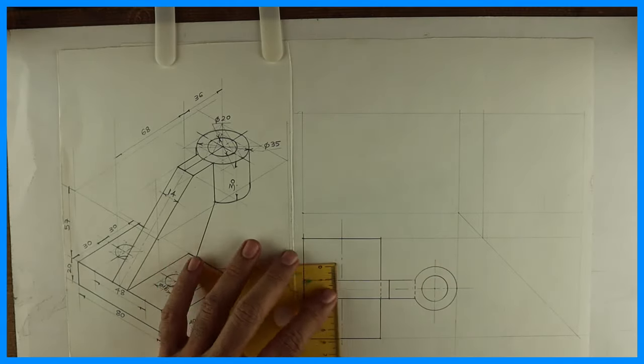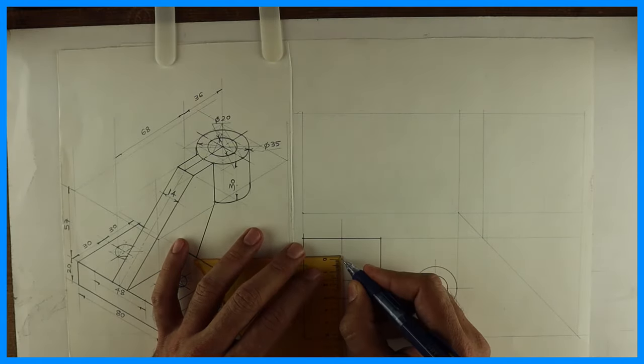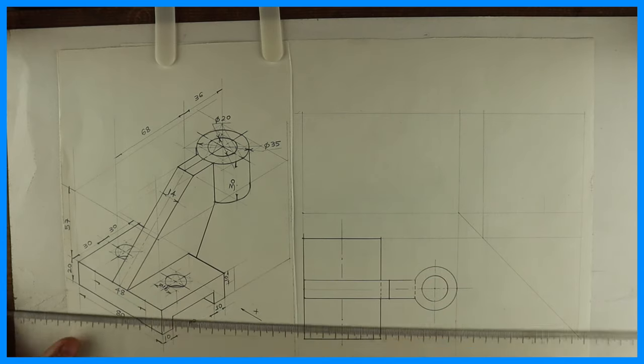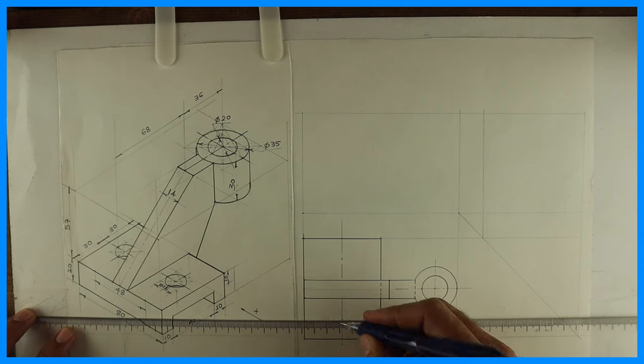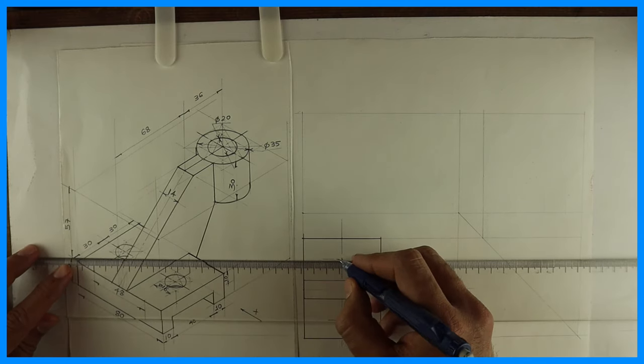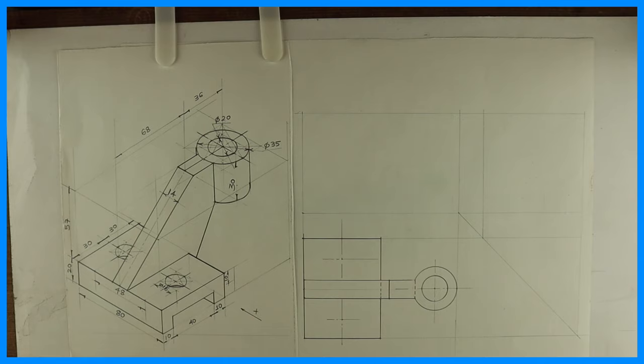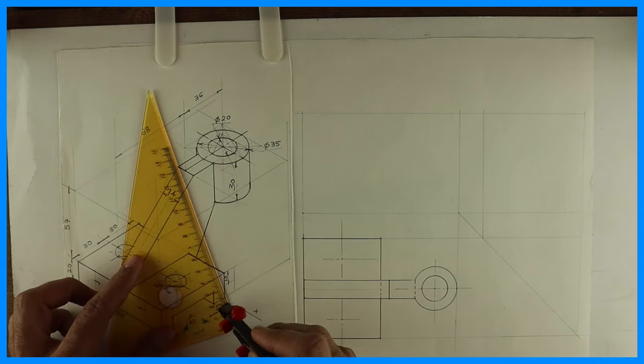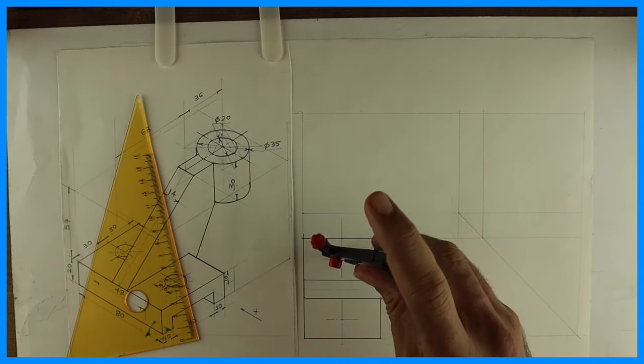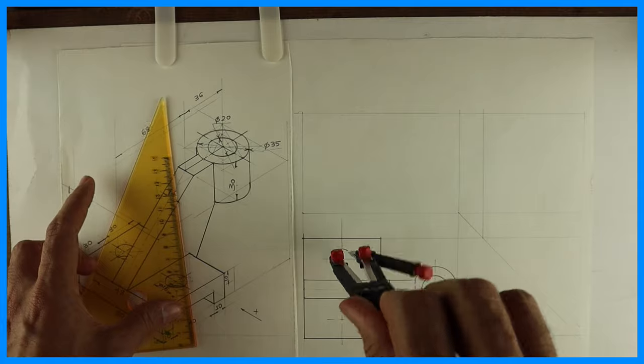Then from center you take 24, 24. Then we'll take radius 8 because diameter is 16. So take radius 8 and you can draw a circle.